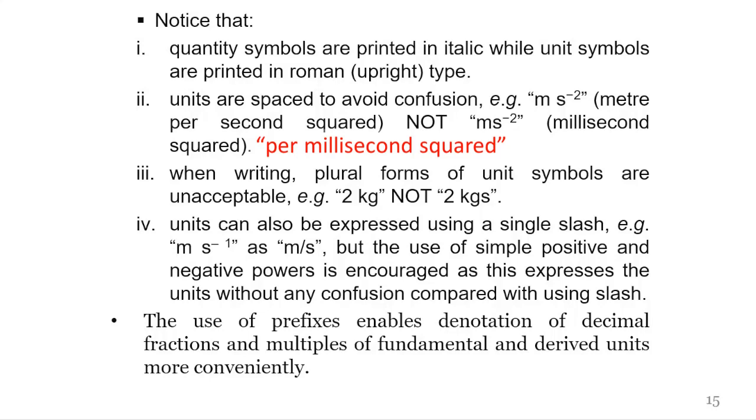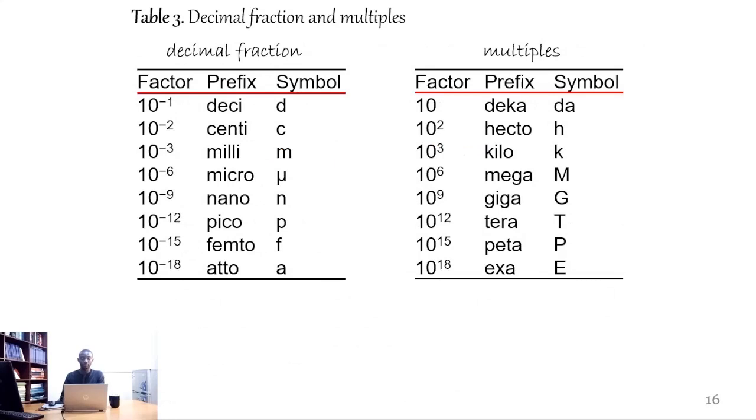Prefixes enable denotation of decimal fractions and multiples of fundamental and derived units more conveniently. Some of these prefixes are given in Table 3. These are decimal fractions and multiples. This is the decimal point and these are the multiples. These are the factors, prefixes, symbols, and the same thing applies here: factors, prefixes, and symbols.